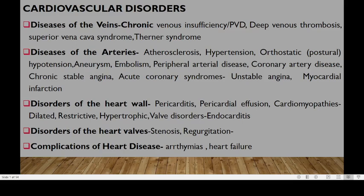Hello and welcome to our session. We are looking at cardiovascular disorders. This lecture follows the presentation on anatomy of the cardiovascular system, where we looked at the heart and the different blood vessels. We'll be looking at disorders affecting those organs, including diseases of the veins like chronic insufficiency, commonly referred to as peripheral vascular disease, followed by deep venous thrombosis, superior venous cava syndrome, and lastly the tenus syndrome.